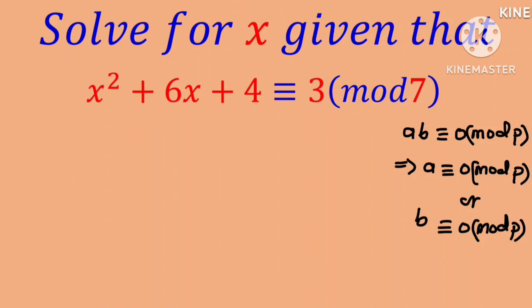We are given that x squared plus 6x plus 4 is congruent to 3 in mod 7. We are going to start by subtracting 3 from both sides so that the right hand side should be zero. This implies that x squared plus 6x plus 4 minus 3 is congruent to 3 minus 3 in mod 7.